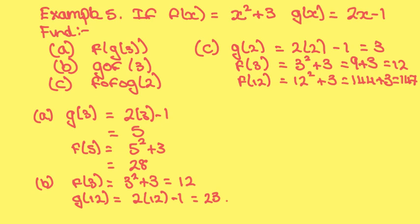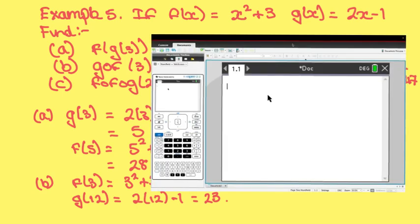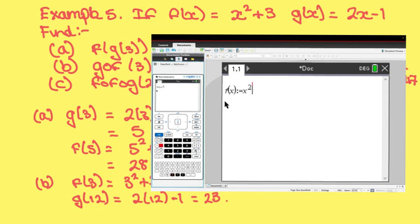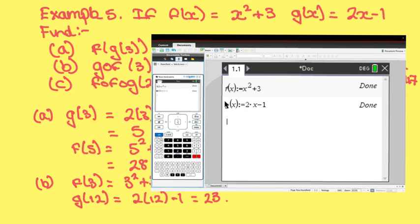You can also do all these on your GDC. Open your GDC at a calculator page, and the first thing you've got to do is define your two functions. Define f of x as x squared plus 3 — make sure you're outside the bracket, press control, and hit enter. Now define your second function g of x as 2x minus 1 — make sure you're outside the bracket, press control, and hit enter.